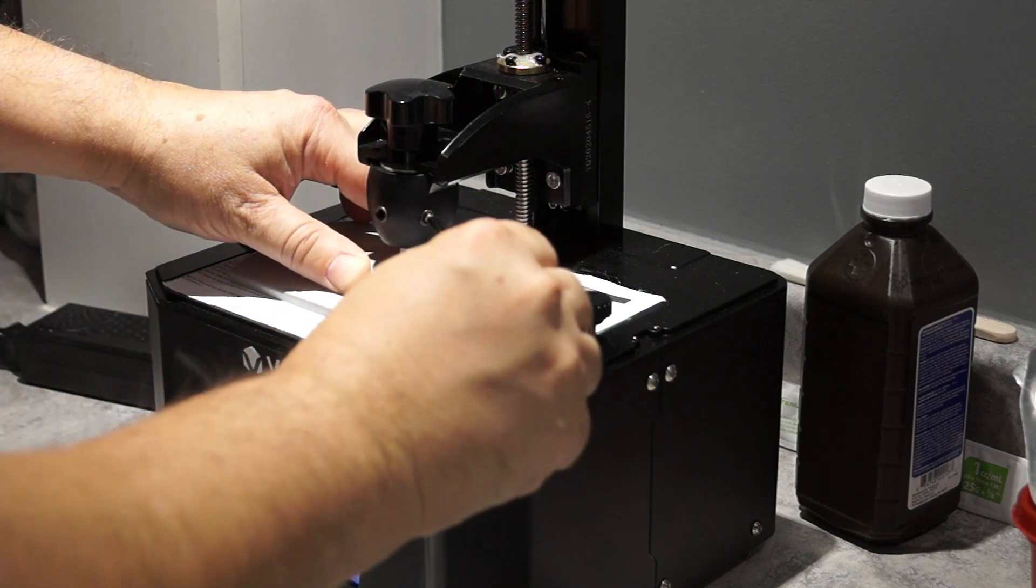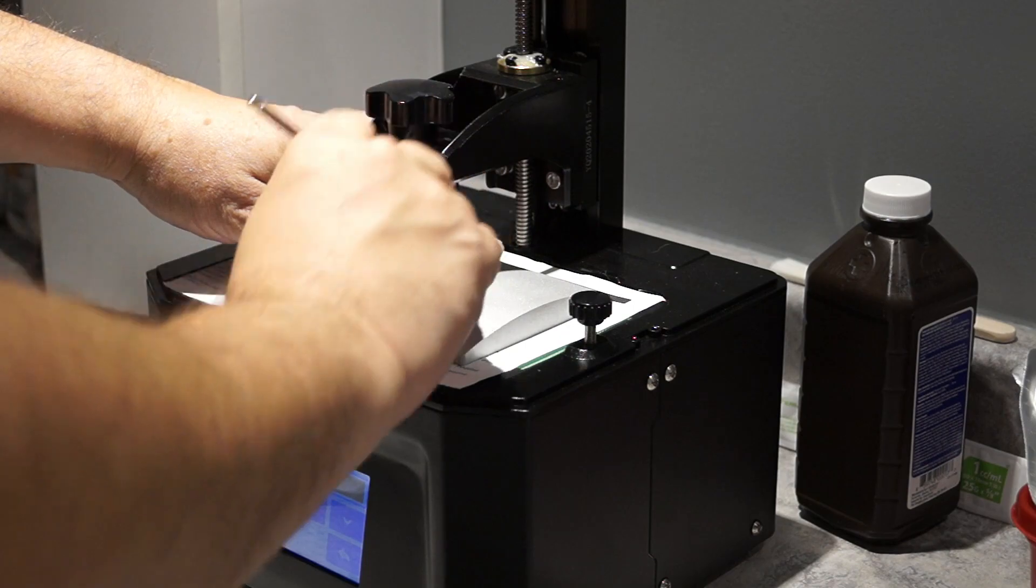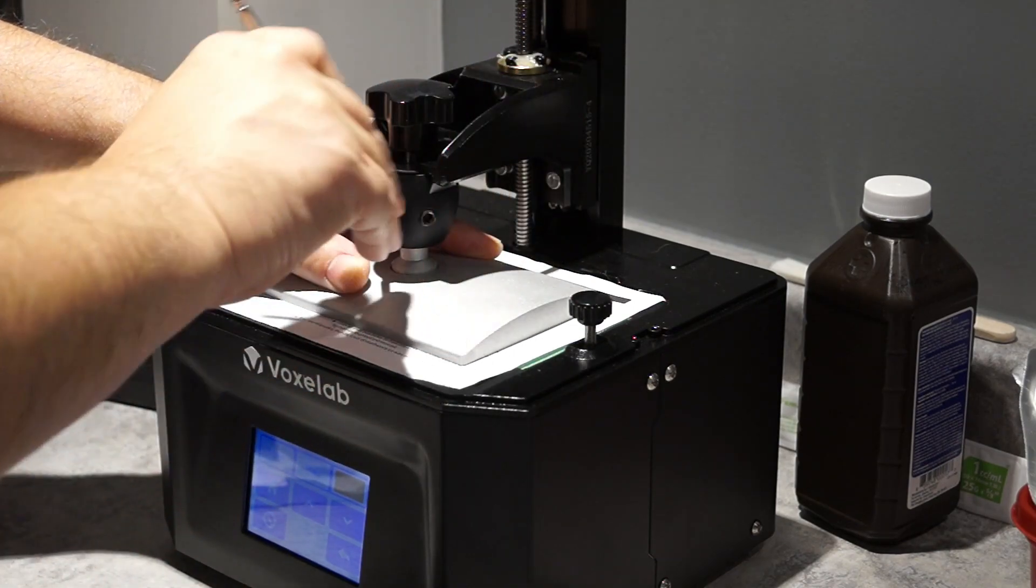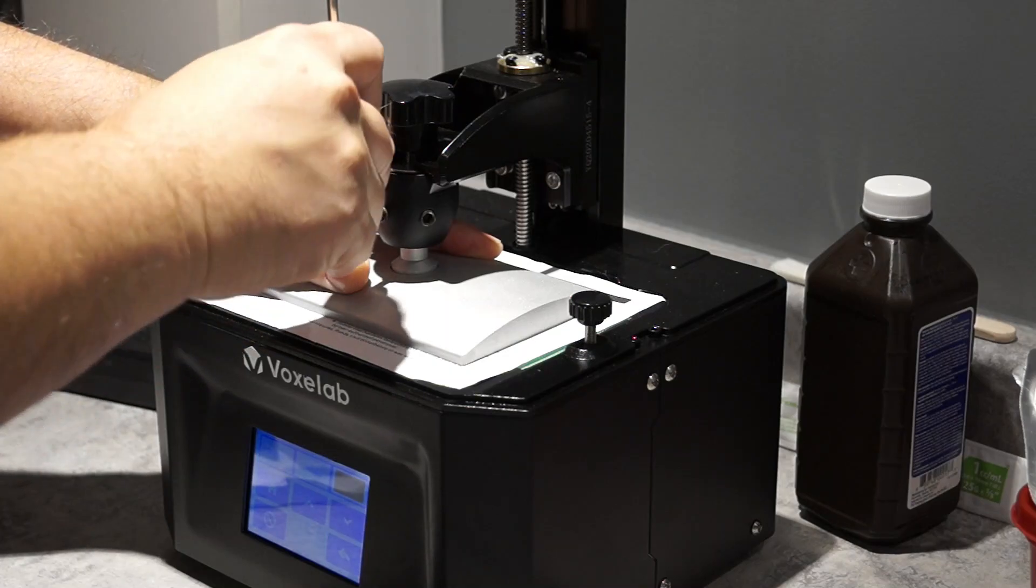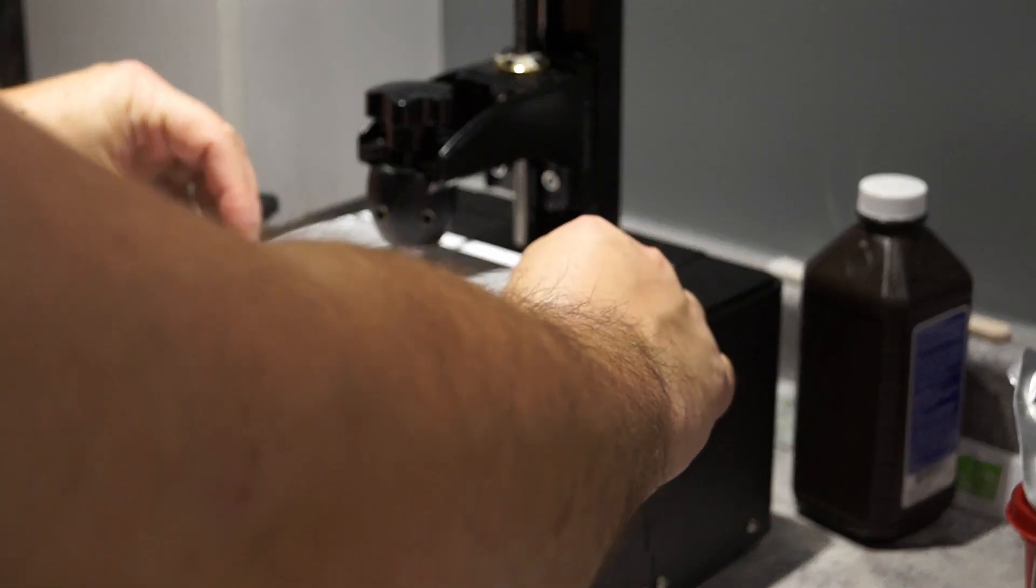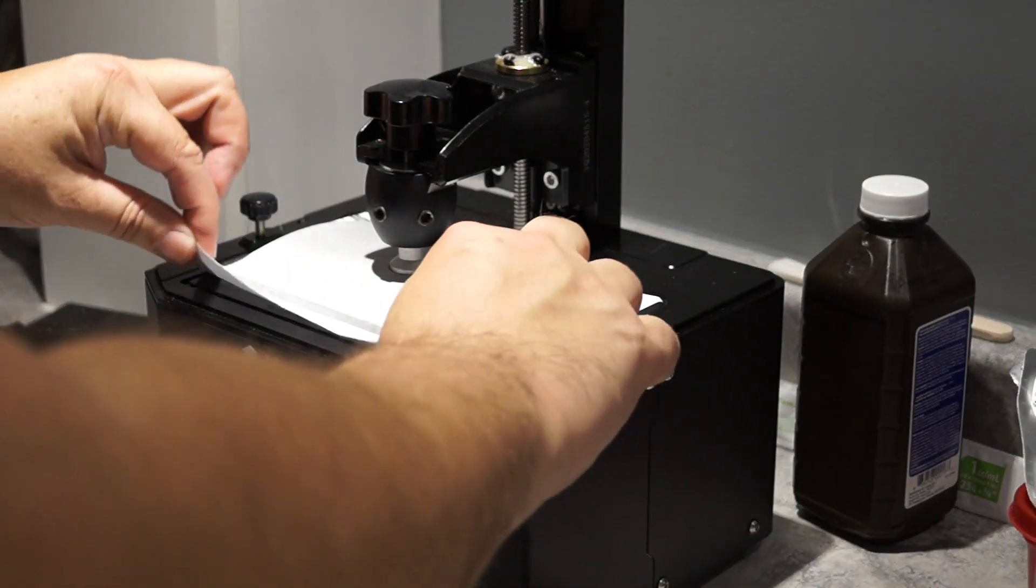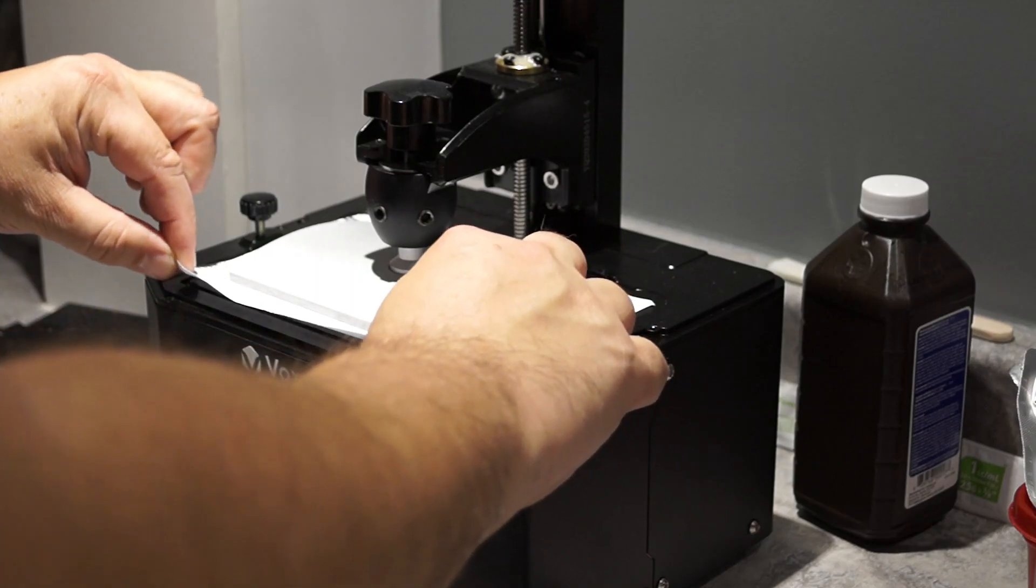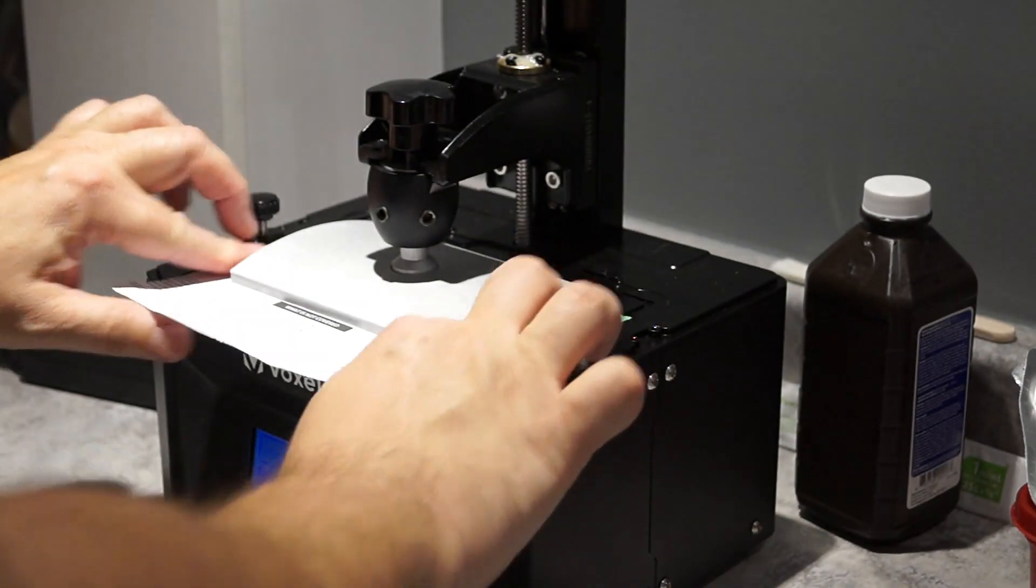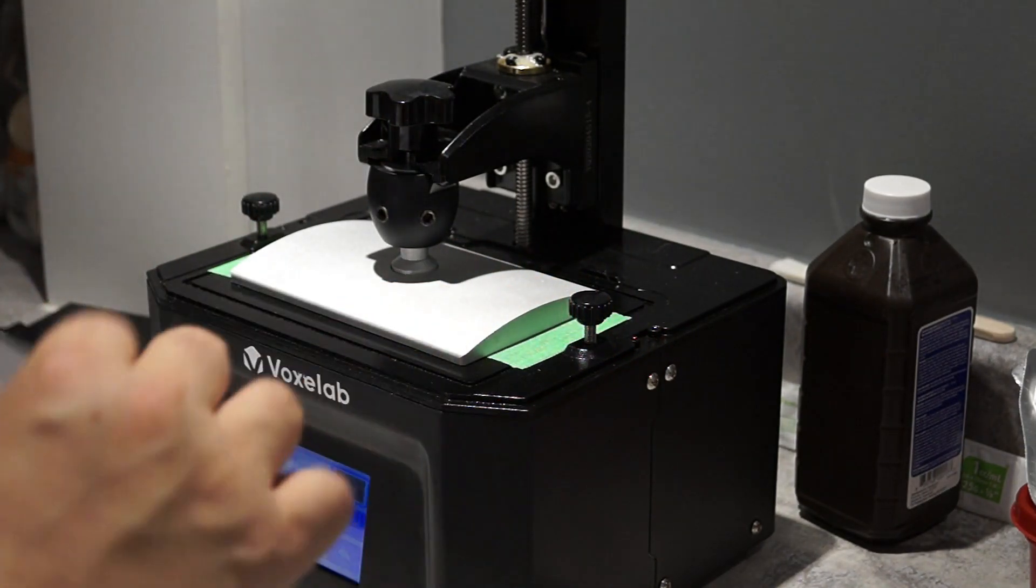So what I'm doing now is tightening the ball head on the build plate. Some other printers on the market have this configuration and some have a square adjustment. The pros and cons I'm not too sure, but from my experience so far the ball joint system actually works quite well. Now what you see me doing here is testing the tension on the paper on the build plate and seeing if there's enough friction to make sure that I got the level properly.